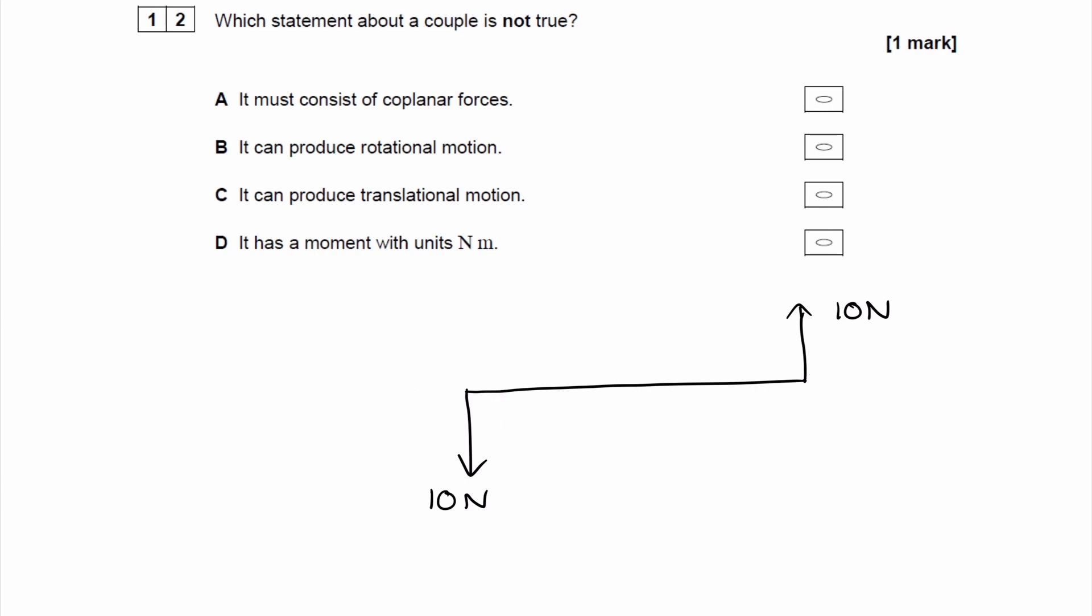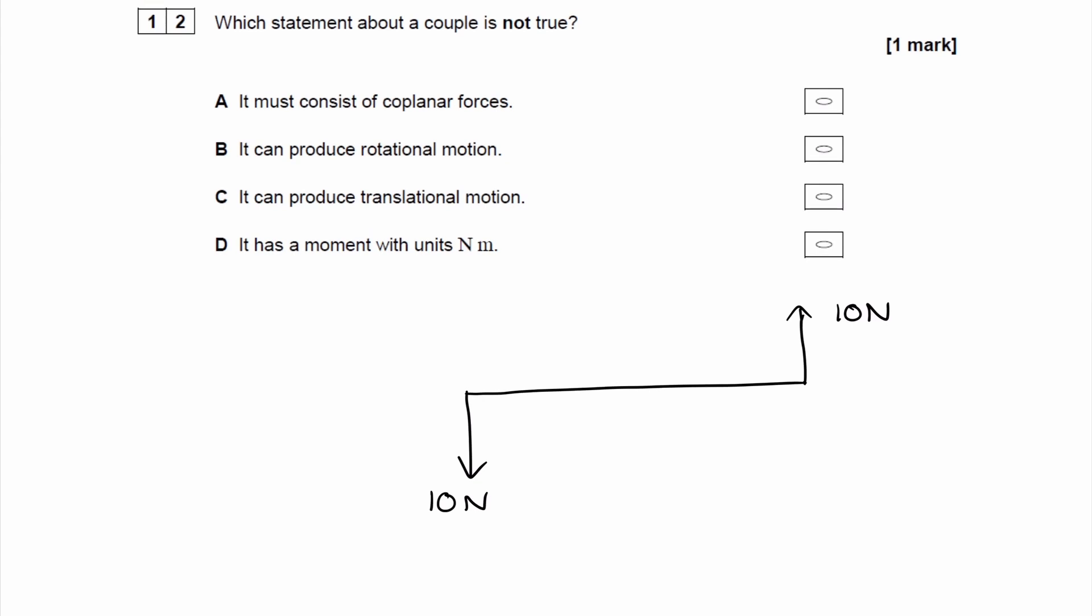So A is true. A couple must be a pair of coplanar forces. Option B, it says it can produce rotational motion. That is true. If you consider a pivot point in the middle here, these two forces will have a net anticlockwise moment about that point. They both have anticlockwise moments. There will be a net anticlockwise moment, and that will cause rotational motion.